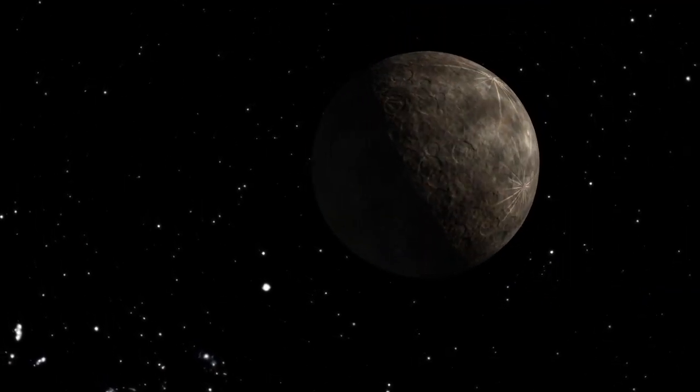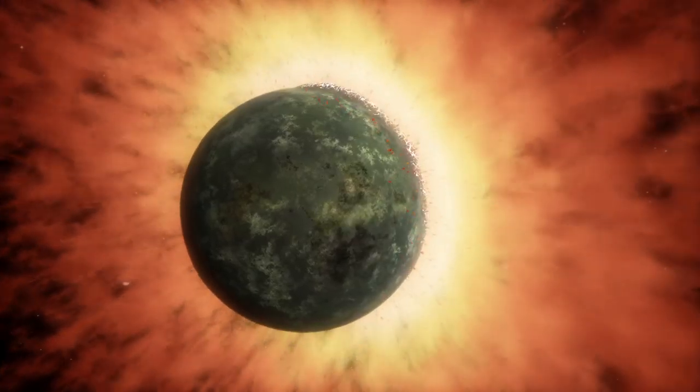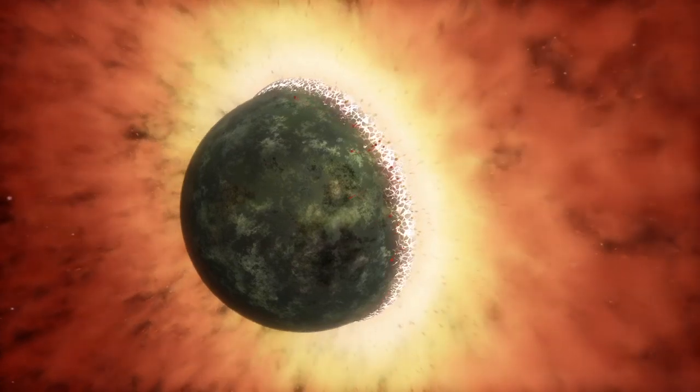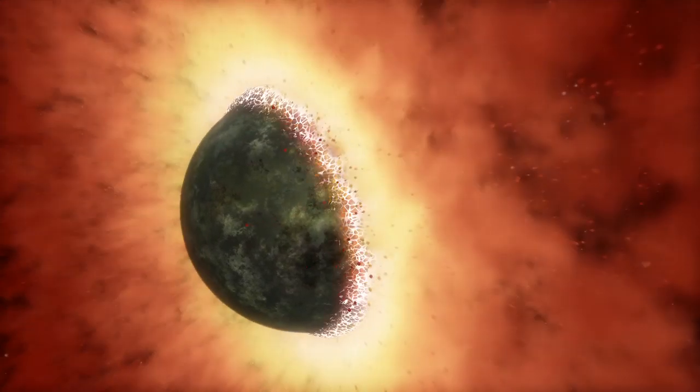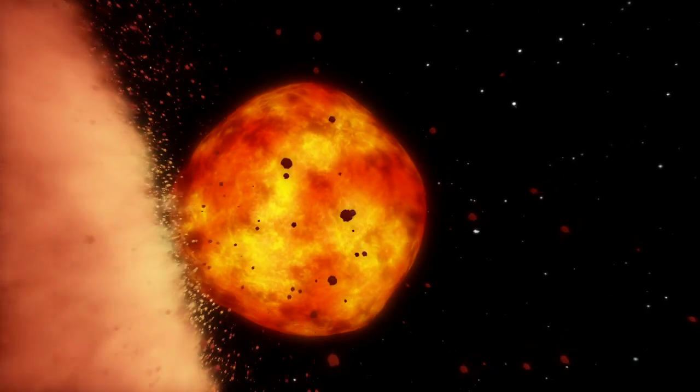Imagine what would happen if our Moon slammed at high velocity into a Mercury-sized planet. The resulting impact would eject a tremendous amount of molten material into space. As it cooled, it would likely form tektite, obsidian, and silicon monoxide gas, explaining the features seen in the HD 172555 spectrum.